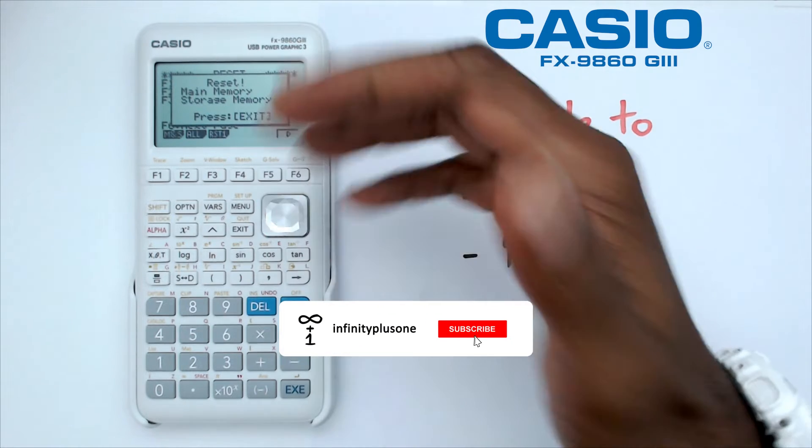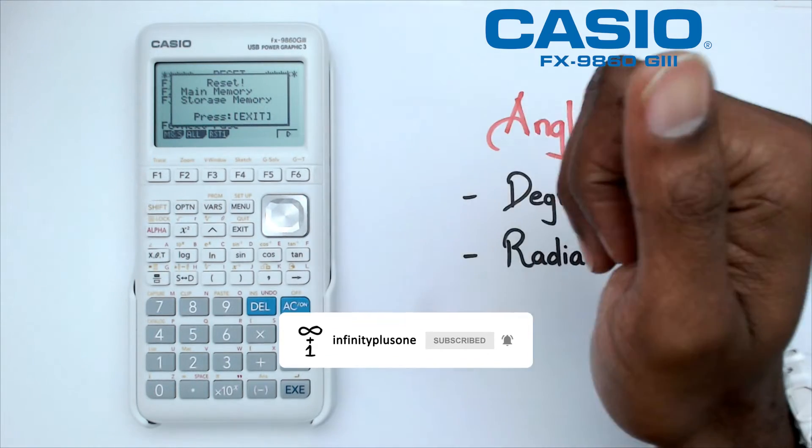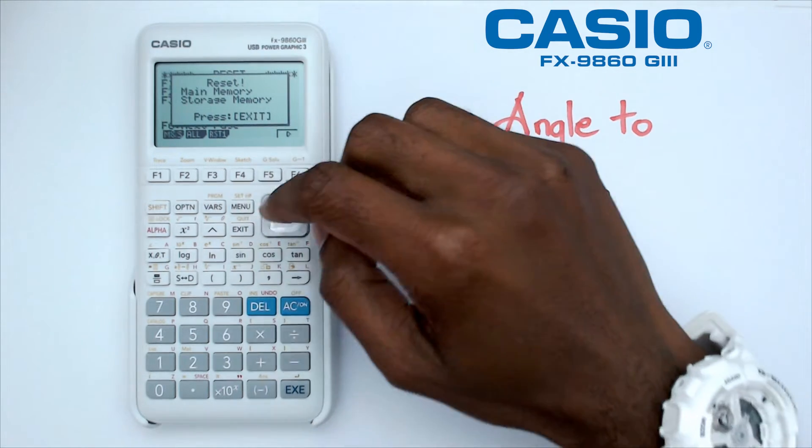All right, so you've just reset your calculator and now you don't know where to change your angle to degrees and radians. That's all right, we're going to cover that right now.